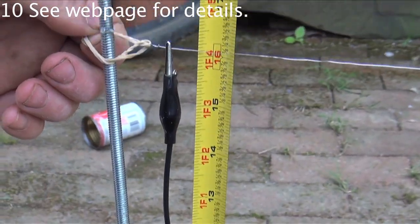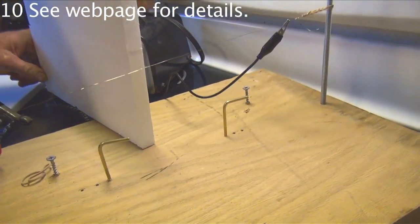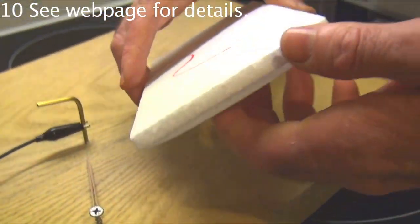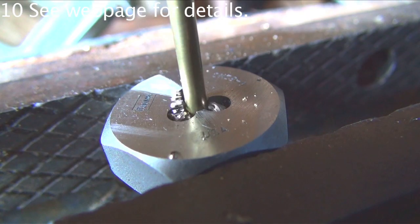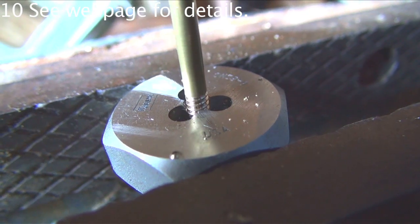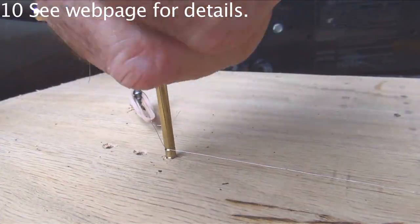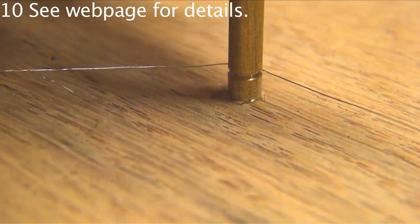You rough cut blocks of foam with the thick nichrome wire. Then you fine cut the foam into precise sheets with threaded notched bronze L pieces and the fine nichrome wire. You fine tune the thickness by turning the L's in or out.